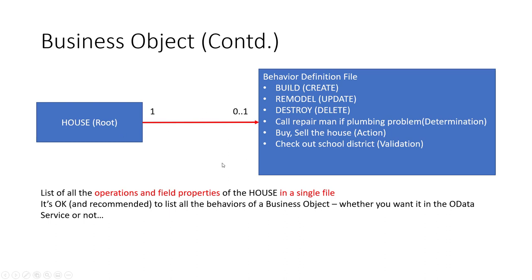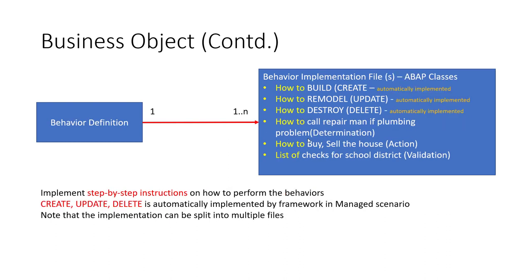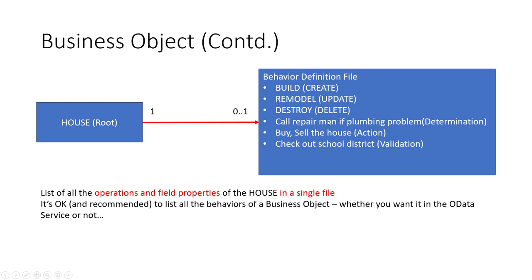You may ask: what about actions and behaviors of child nodes? Go ahead and put all of that in the same behavior definition file. If the room has an action like remodeling or adding rooms, list them all in the same file. The key is there is a strict one-to-one mapping. It is recommended to list all behaviors in the file whether you actually use them or not.